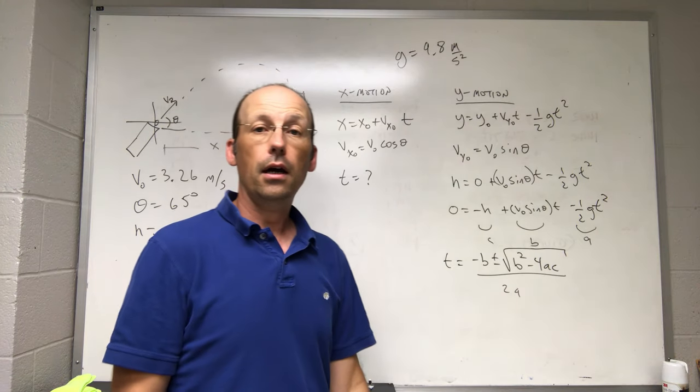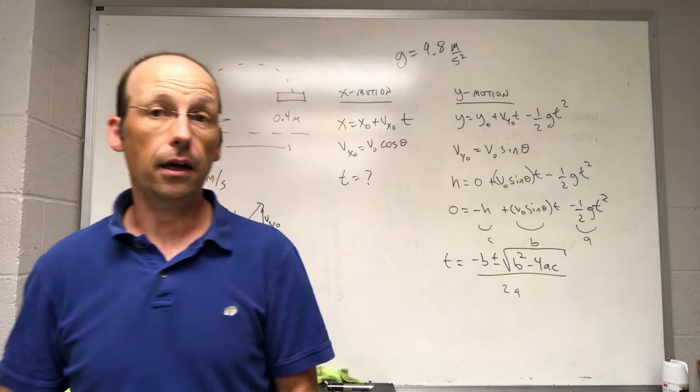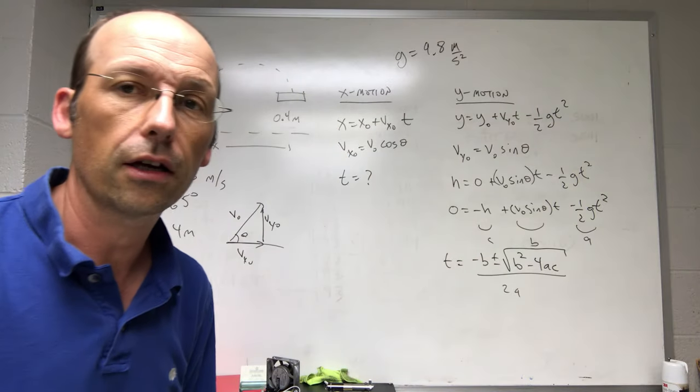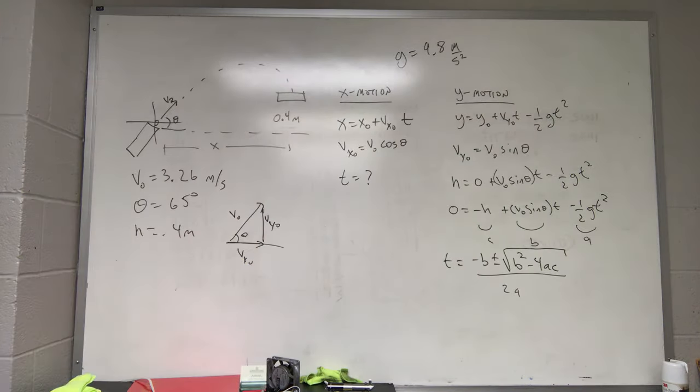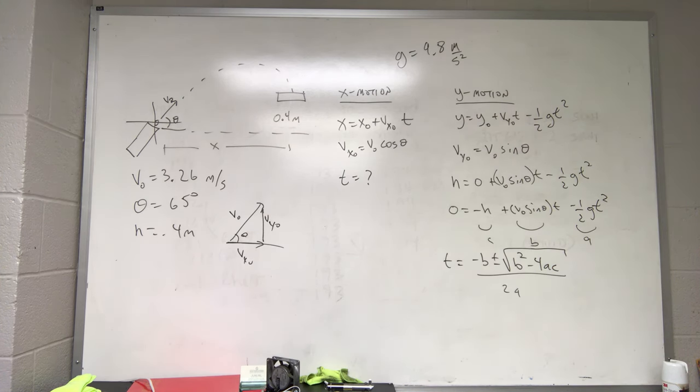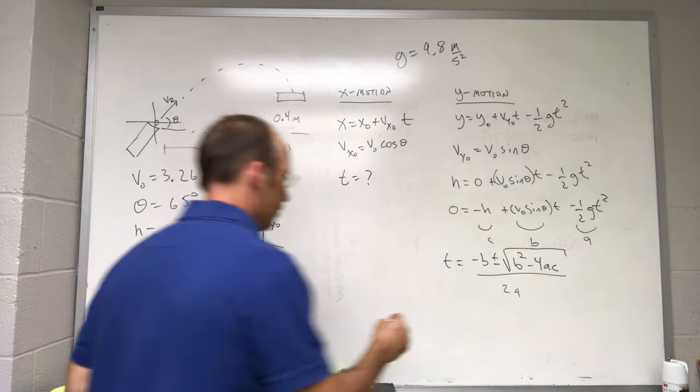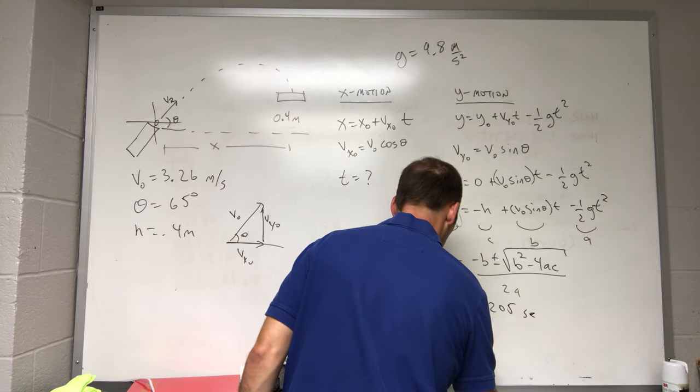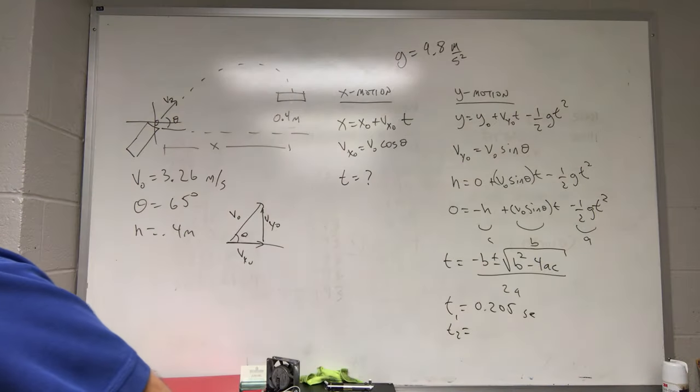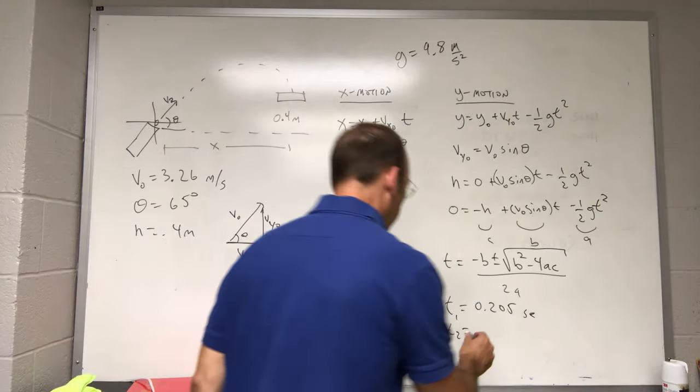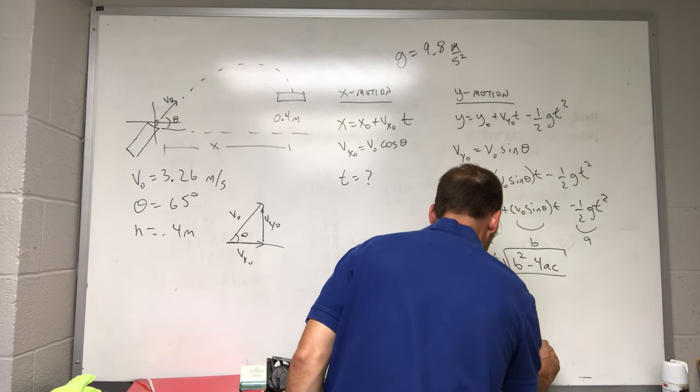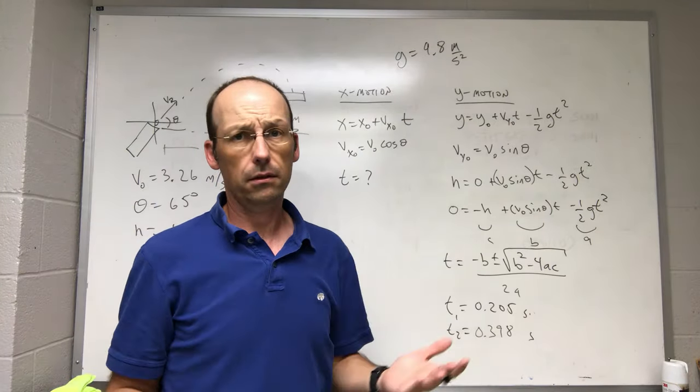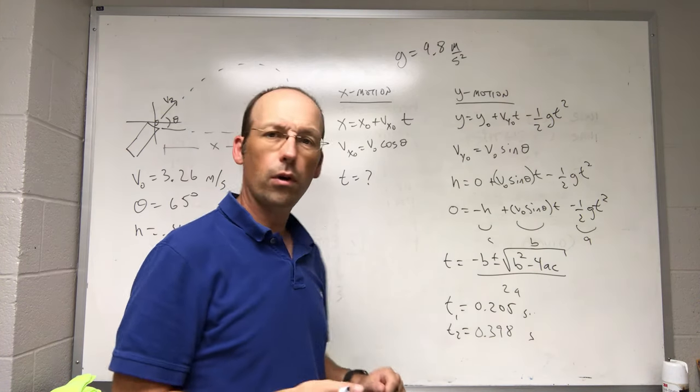So I know all my values. It's a little complicated putting it in, a lot of punching in the calculator to do. I actually did it on Python just because it's easier to type an equation. And I got the two values for time. The two values for time are 0.205 seconds and t2 0.398 seconds. They're both under a second, which makes sense. I mean, these things aren't going that fast, so in the air it won't be that long.